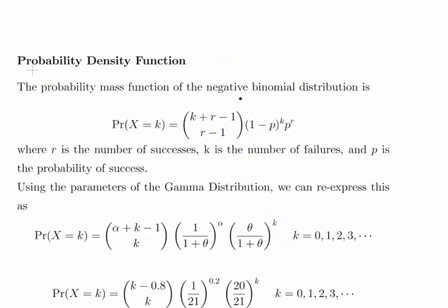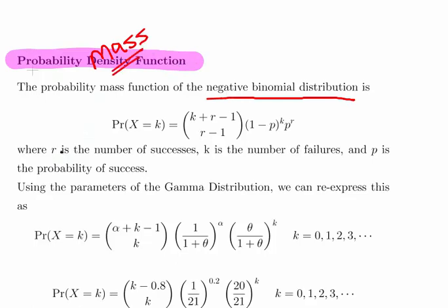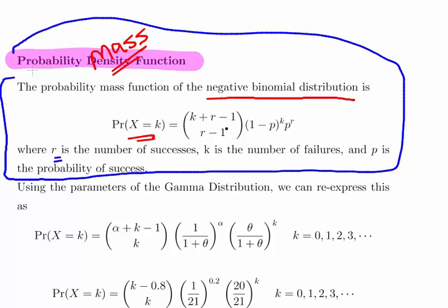This leads on to the probability mass function of the negative binomial distribution. The probability mass function of the negative binomial distribution is given as follows. We're going to use this expression here. Where R is the number of successes, K is the number of failures and P is the probability of success. That's just the negative binomial 101 there.